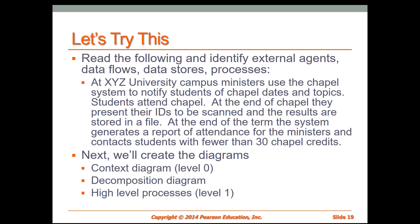Here's our scenario again. This time we're going to create a decomposition diagram. When we're doing process modeling, we start out with a context level diagram — sometimes referred to as a level zero diagram — to create the overview of our system or process. In the decomposition diagram, we take the system apart into its sub-processes, and we usually have two to five sub-processes in each of the systems we're diagramming.